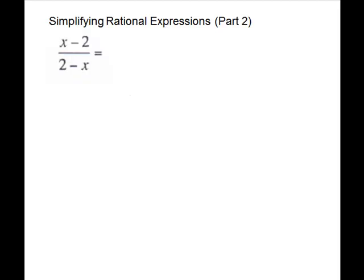So for our next problem, we notice these both have an x and a 2. One has a positive x, one has a negative x. One has negative 2, one has positive 2. And one of them is turned around. So these are opposites. We can force them to match.